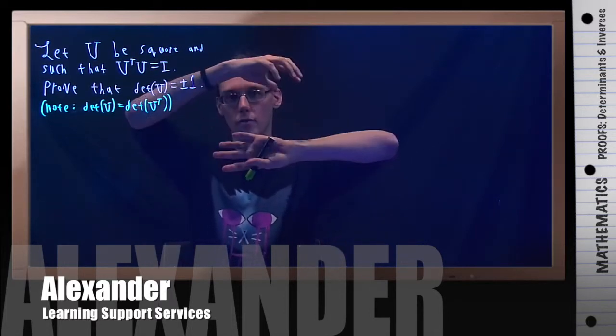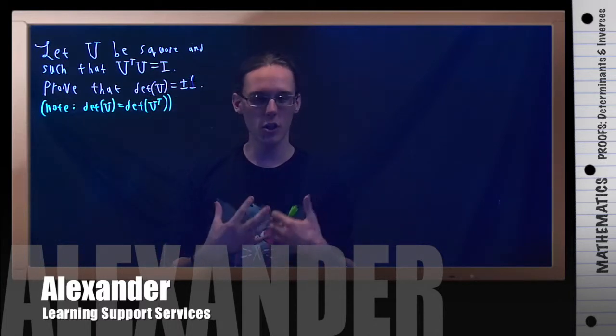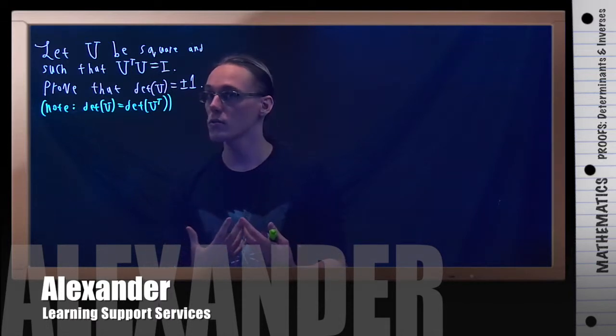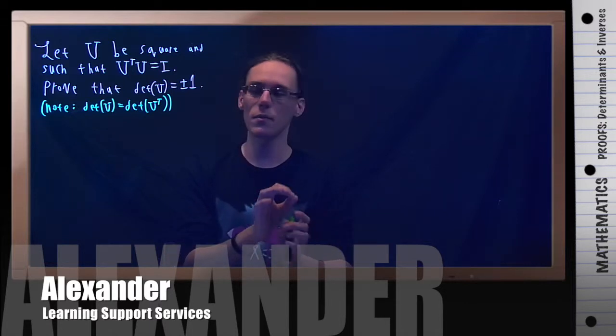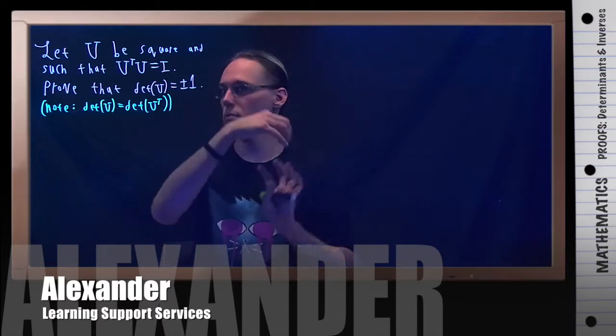When you transpose a matrix, you've basically flipped it around, and you still find the determinant. You haven't changed a fundamental property of the matrix as far as its numerical values, just their orientation. For determinants, the transpose does not affect it.